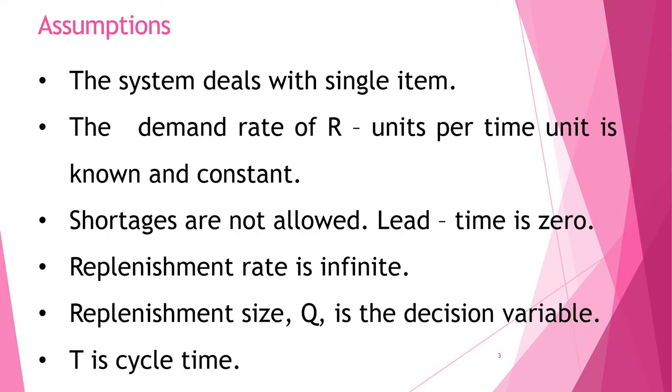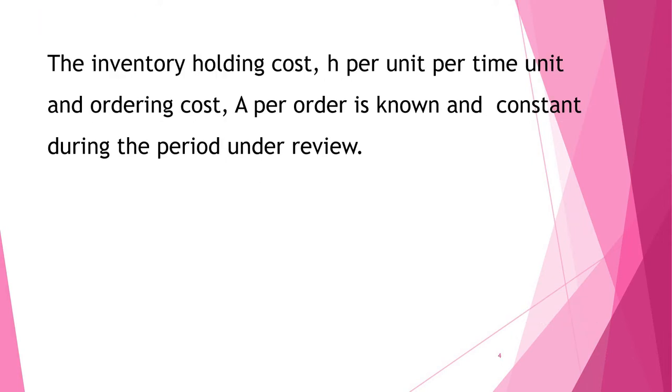Let us first have assumptions on which we will be discussing EOQ model. The system deals with single item. The demand rate of R units per time unit is known and constant. Shortages are not allowed. Lead time is zero. Replenishment rate is infinite. Replenishment size Q is the decision variable. T is cycle time. The inventory holding cost H per unit per time unit and ordering cost A per order is known and constant during the period under review.